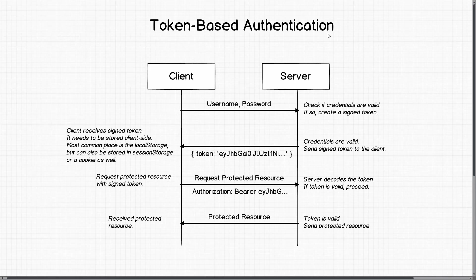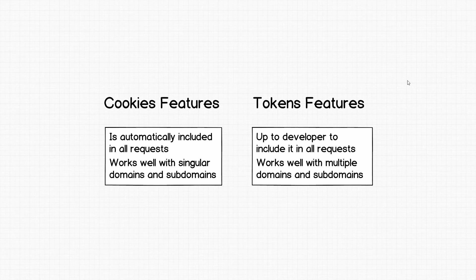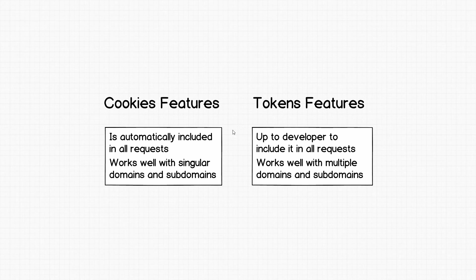With cookie-based authentication, the backend has to do a database lookup to check whether the session ID is stored in the active sessions table, and that round trip is likely to take longer than simply decoding a token. So token-based authentication should yield better performance out of the box. Now let's quickly go over the main differences between cookies and tokens.